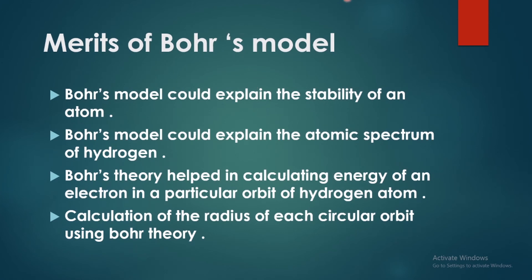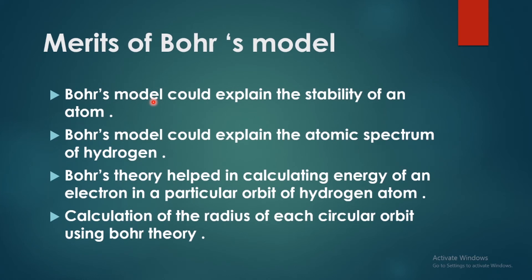Merits. This model overcame the drawbacks of Rutherford's model. The Bohr model describes the stability of an atom — that is, stability is explained. According to the Bohr model, an electron revolving in a particular orbit cannot lose energy, so the problem of the electron losing energy and falling into the nucleus does not arise.